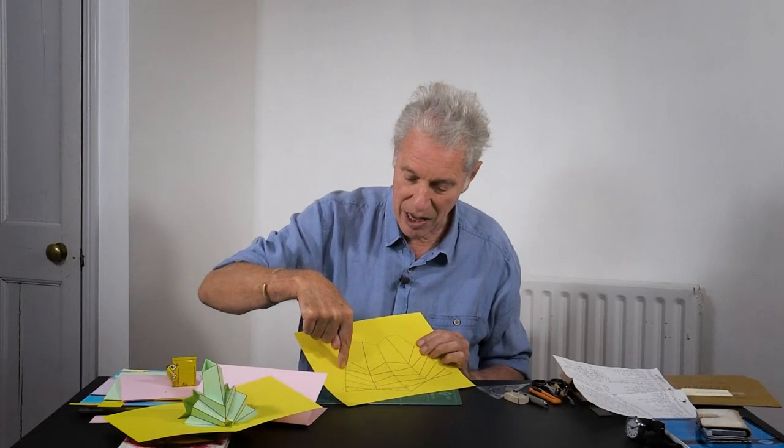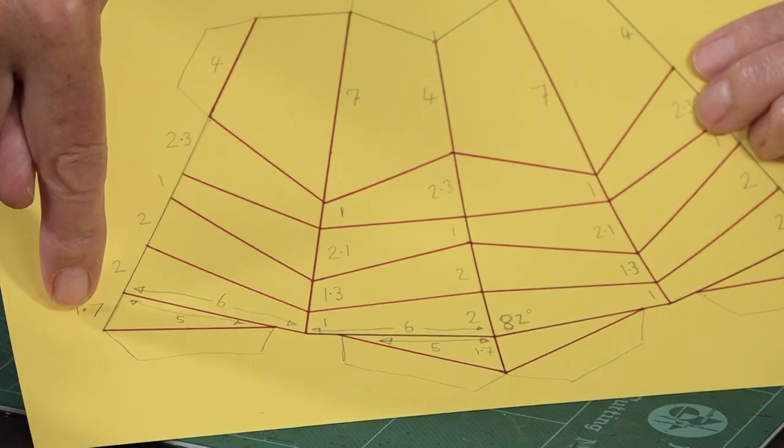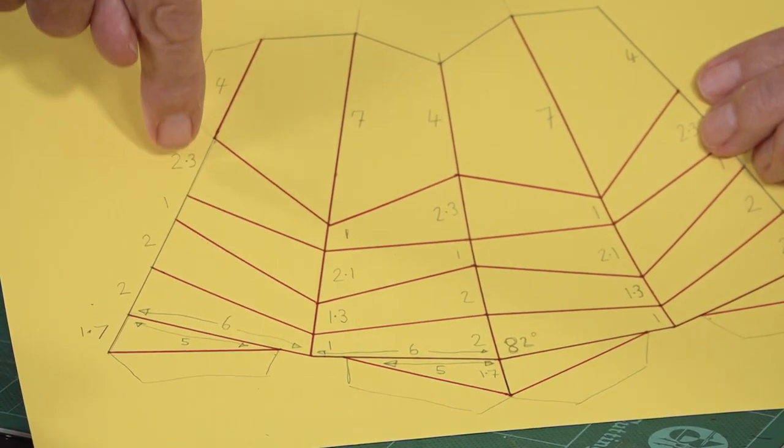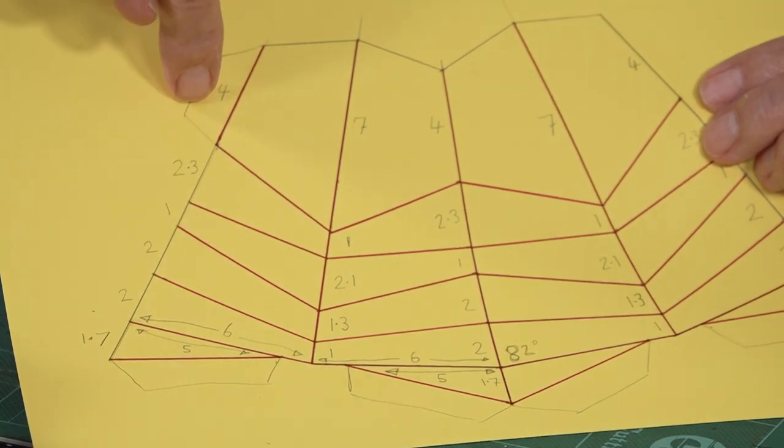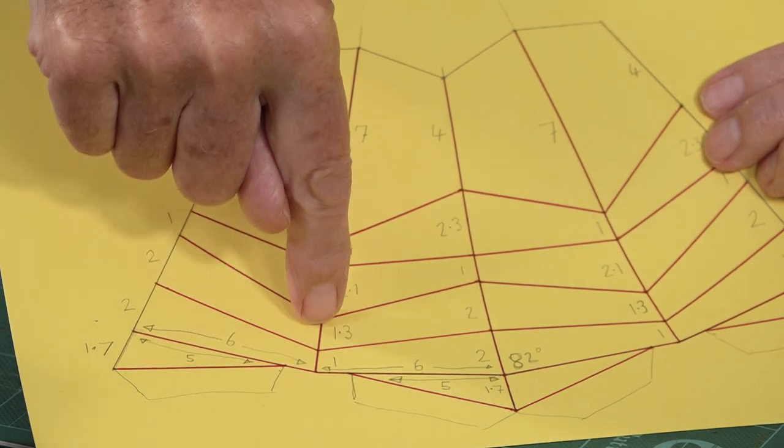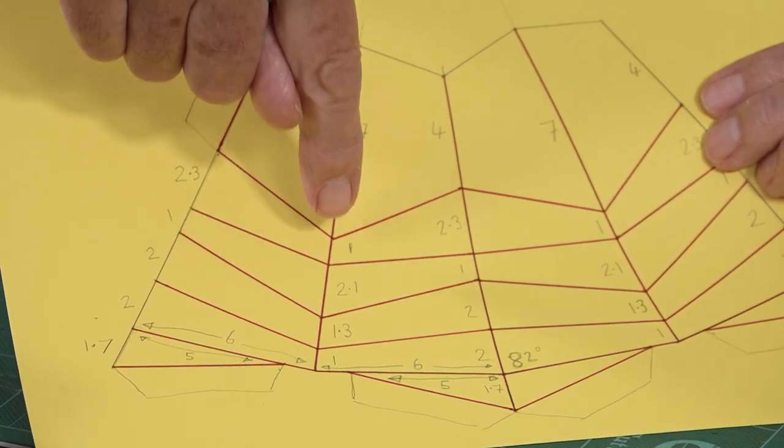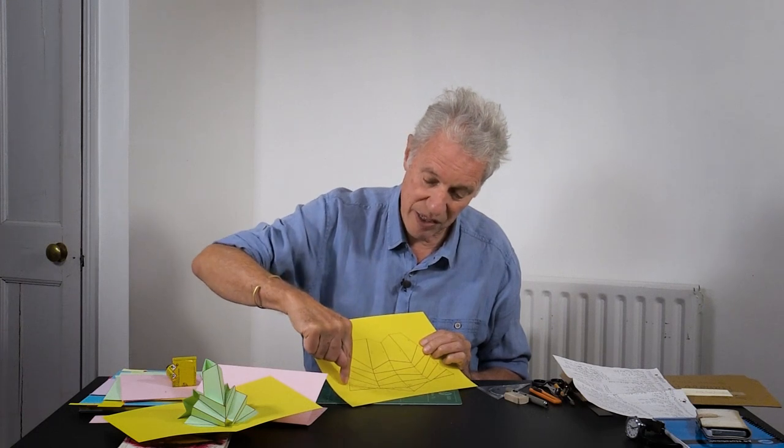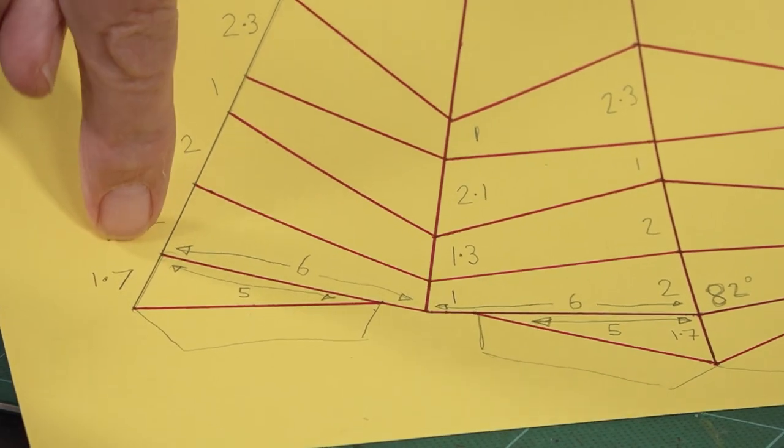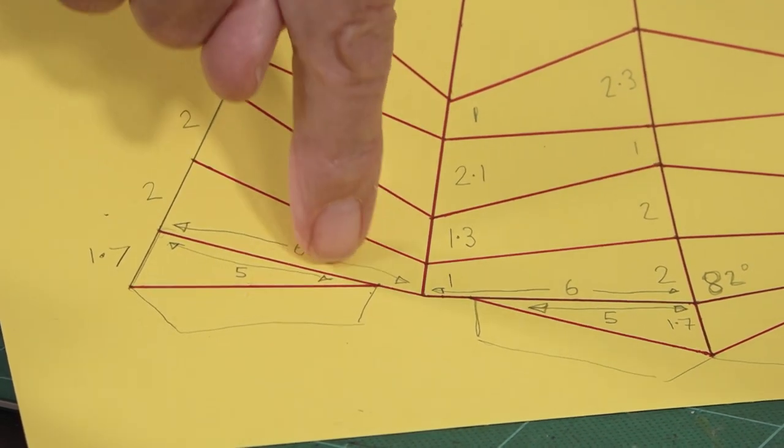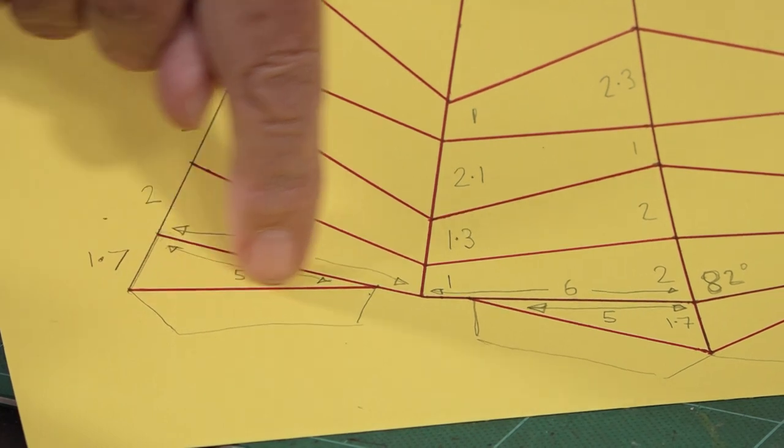Then I've measured up the side here, 1.7, 2, 2, 1, 2.3, 4. And then up this one, it goes 1, 1.3, 2.1, 1, 7. Below this line, the six centimeter one, it goes down 1.7. And then five centimeters along the six centimeter line, there's a point and you join that.